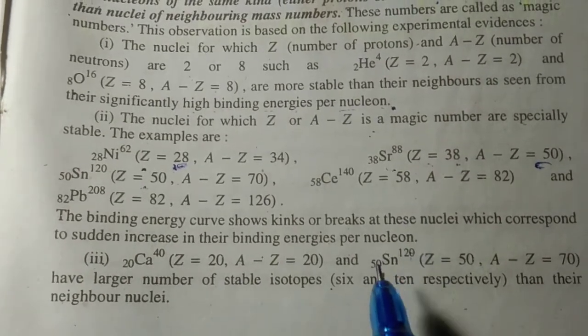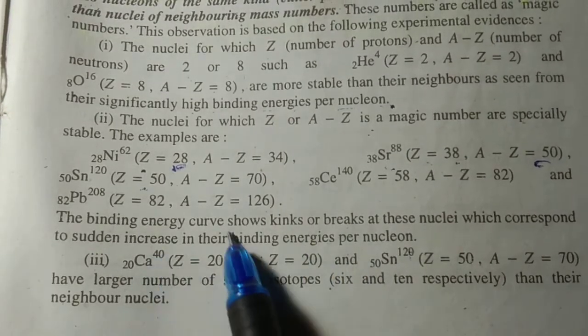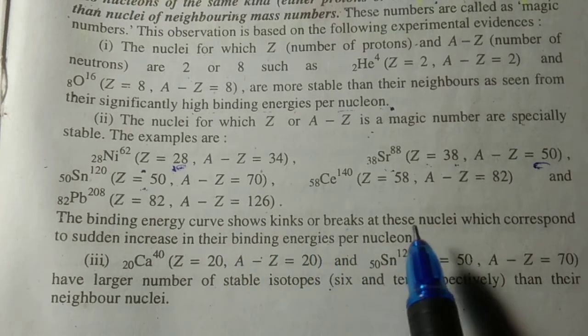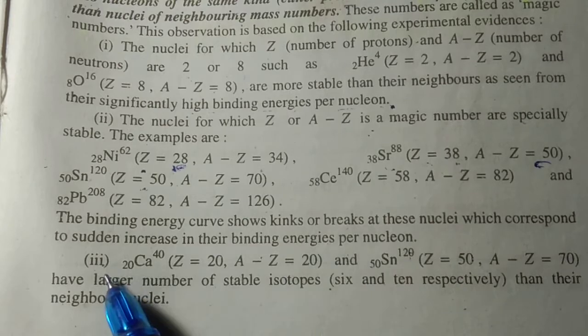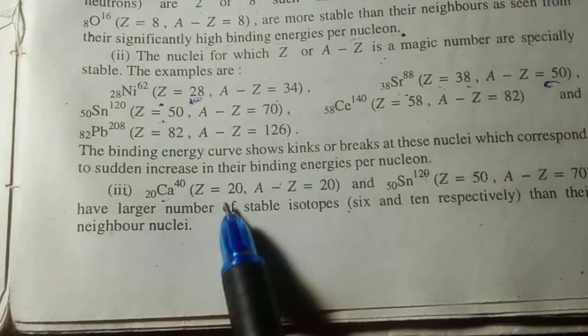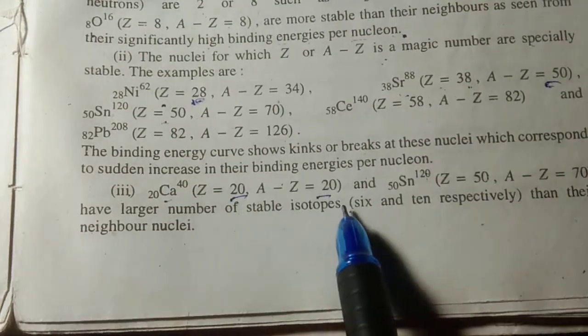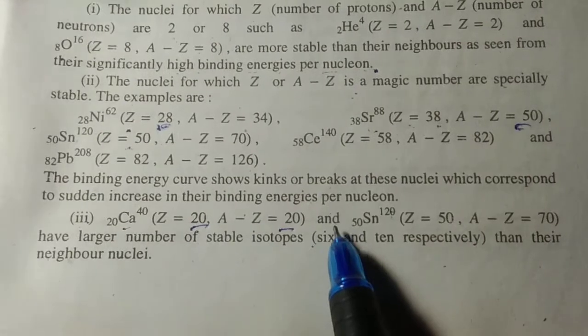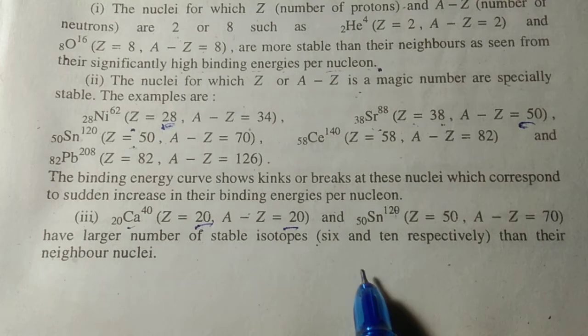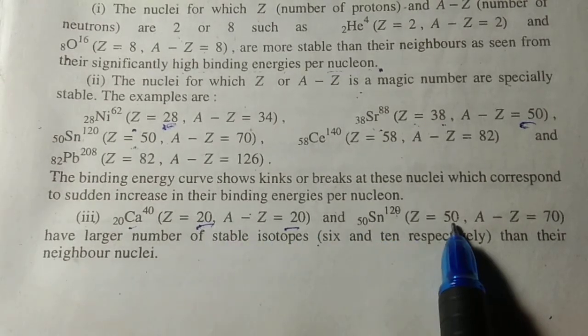Examples of double magic nuclei include Calcium-40, where both Z and A minus Z equal 20, and Lead-208, where Z equals 82 and A minus Z equals 126. Both the proton and neutron numbers are magic numbers. These nuclei have larger numbers of isotopes than their neighboring nuclei.